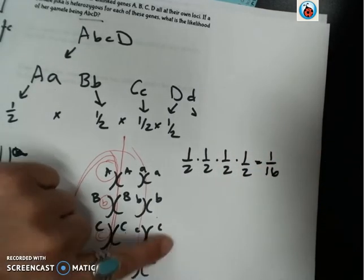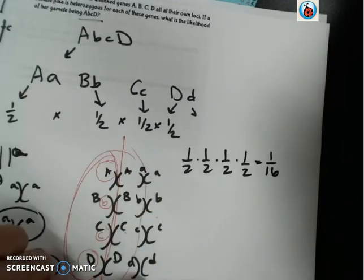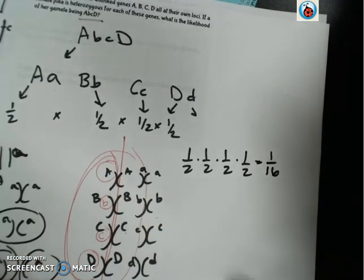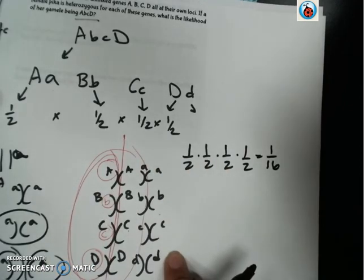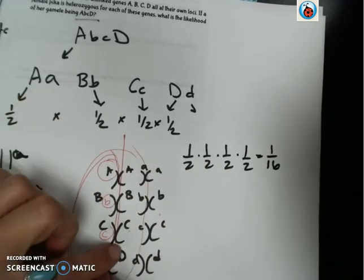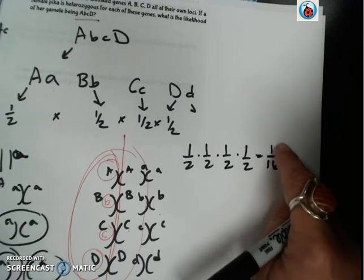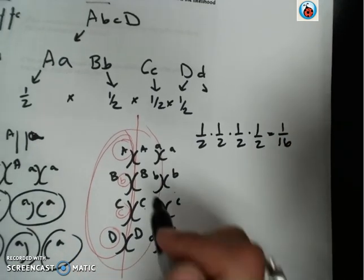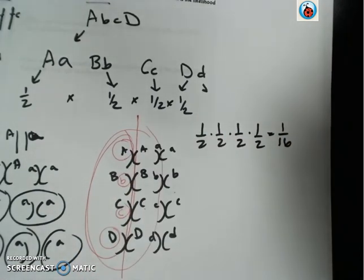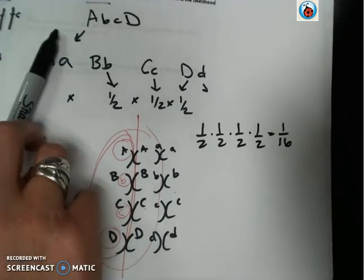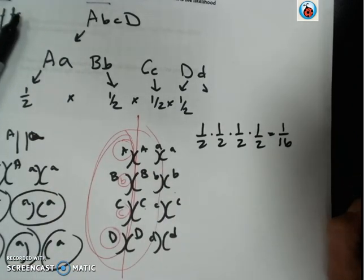So we are looking at just four different genes here. There are sixteen different combinations possible of how they can assort to the middle of the cell. So we say that there is a one out of sixteen chance that all four of these particular alleles will end up in the same gamete.